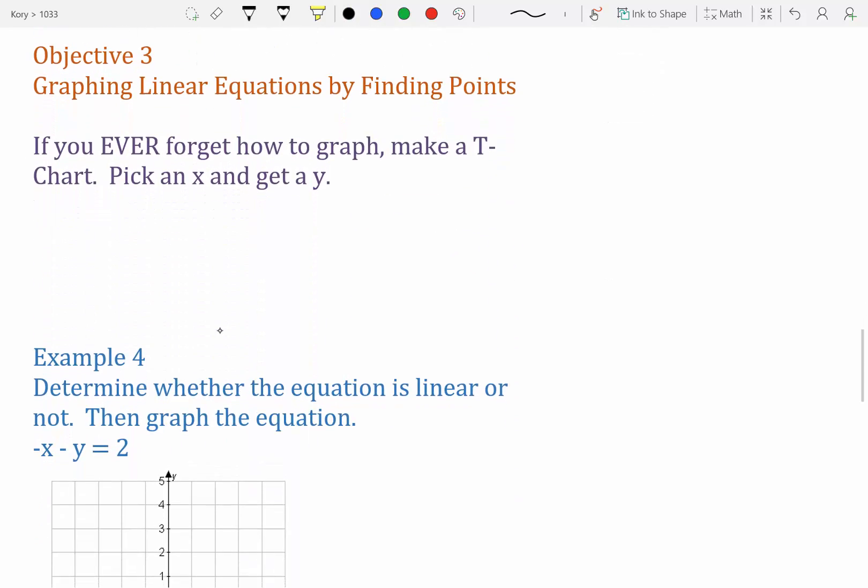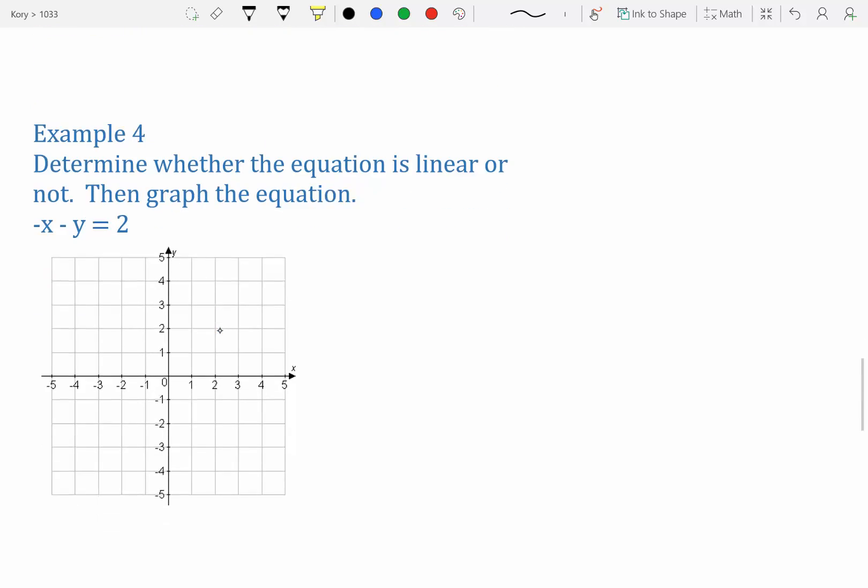Objective 3. We're going to graph linear equations by finding points. There are many ways to graph equations and functions. This is just one way you can use. If you ever forget how to graph, make a t-chart. So you pick an x and you get a y. And this works for any type of graph. For intermediate algebra, you are able to pick any x and get any y you want.